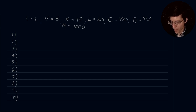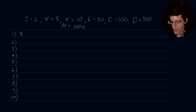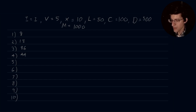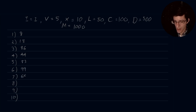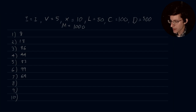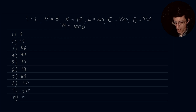Express the following numbers in Roman numerals. Number 1 is 8. Number 2 is 18. Number 3 is 86. Number 4 is 44. Number 5 is 83. Number 6 is 93. Number 7 is 99. Number 8 is 64. Number 9 is 110. Number 10 is 237. And also 550.